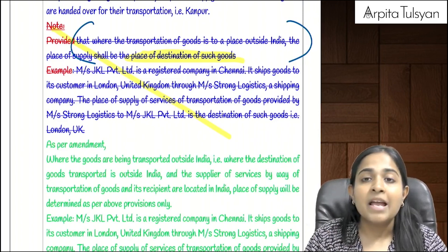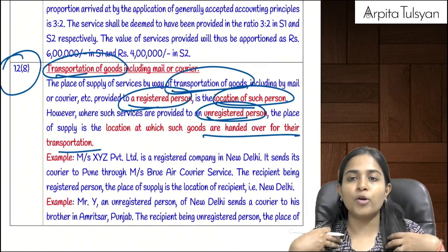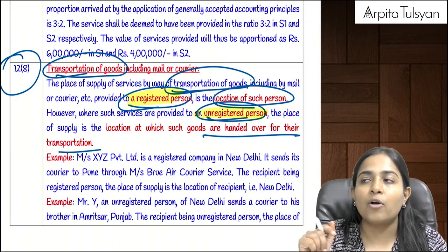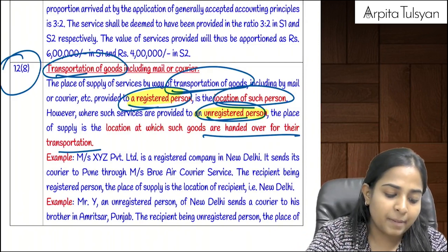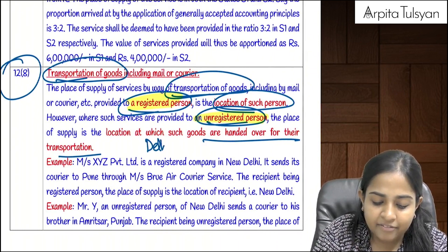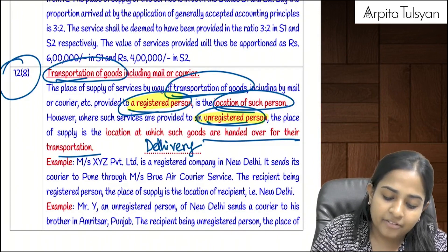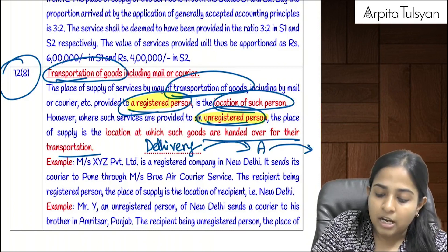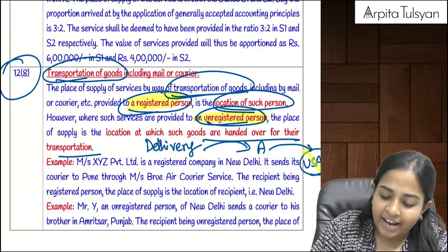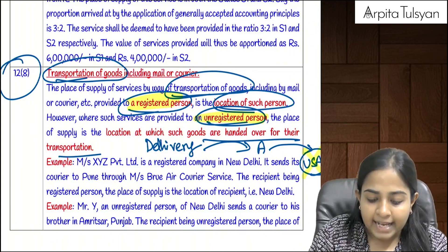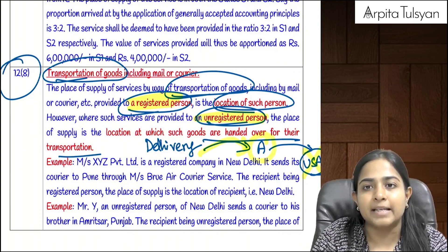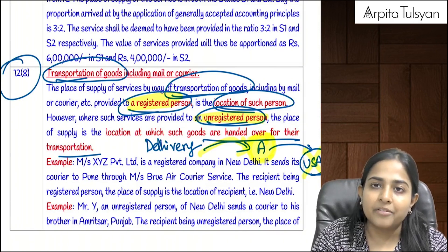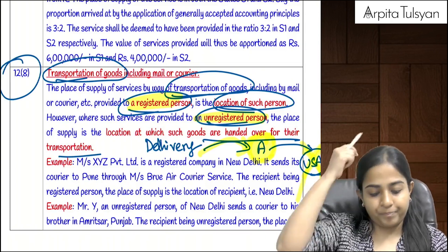Under the amended Section 12(8), the place of supply is determined solely based on whether the service recipient is a registered or unregistered person — the destination of the goods is irrelevant. For example, if a delivery company transports goods for a registered person (like Arpita) sending goods to the USA, the place of supply is simply the location of the registered recipient. Where the goods are going does not matter.